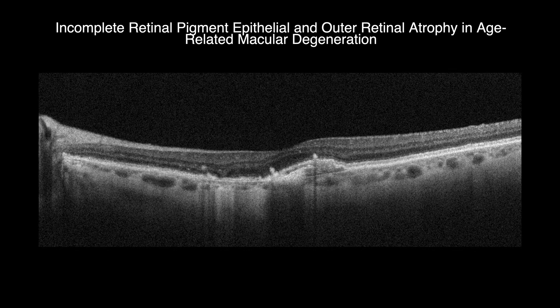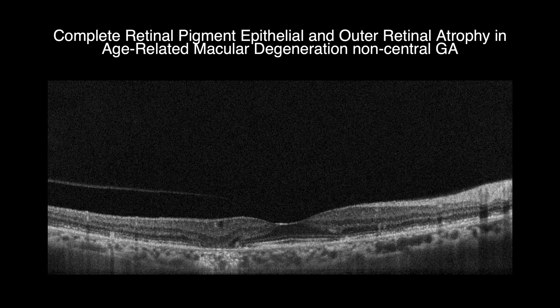RPE can be atrophied completely or incompletely. In cases of incomplete retinal pigment epithelial and outer retinal atrophy in age-related macular degeneration, the RPE is not completely atrophied. It will be presented with increased reflectivity of the underlying choroid with attenuation or disturbance of the RPE layer, with or without outer retinal atrophy including ellipsoid zone degeneration. In contrast, when RPE is completely atrophied, it will show loss of the RPE layer. Only Bruch's membrane is visible with increased reflectivity of the choroid due to the absence of RPE to reflect light, and it will be associated with the loss of the ellipsoid zone and external limiting membrane.